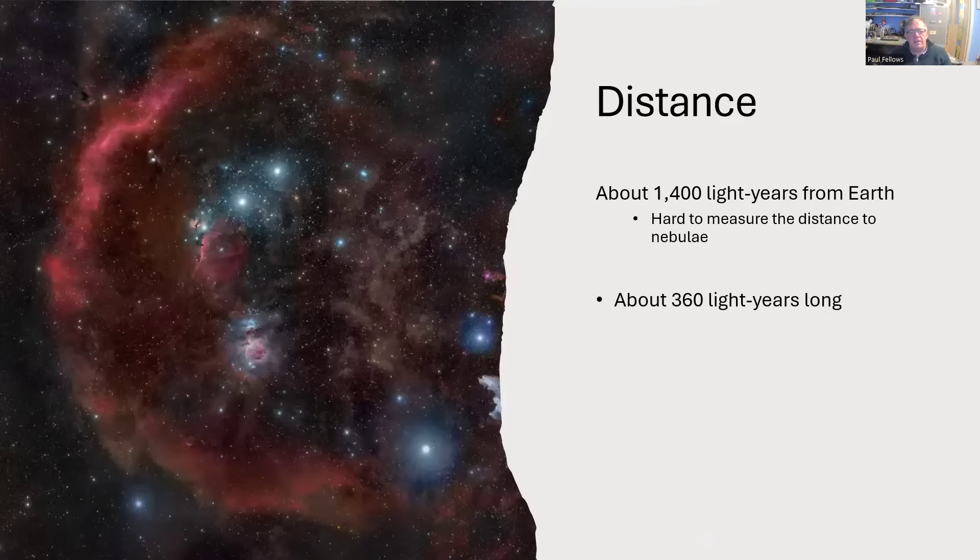It's about 1400 light years away. That's roughly the same distance of a lot of the objects in and around Orion. In fact, 1400 to 1600. It's somewhat tricky to measure the distance to these nebulae. You tend to have to find objects that you know are embedded in them and measure the distance to those. And for Barnard's Loop, that's a particular challenge. And 1400 light years away, 360 light years long in that semi-circle that we're looking at in the photograph there.